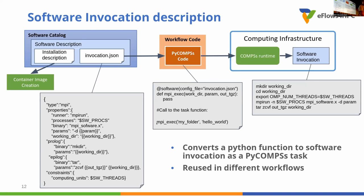You can then call it in the workflow just like a normal Python function. What the runtime does is take this description and generate code that is executed transparently to the user in the computing infrastructure. The nice thing is that if you want to reuse the same software in another workflow, you just create the same function in the other workflow — you don't need to program anything else, just include the description.